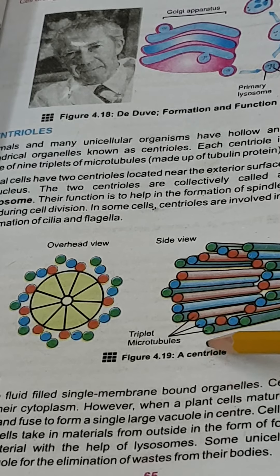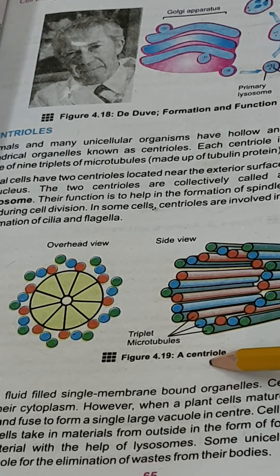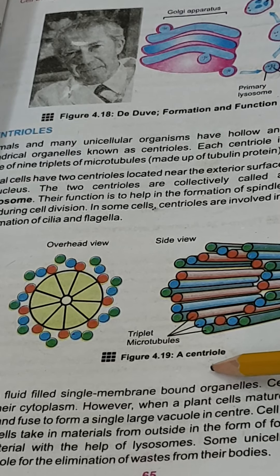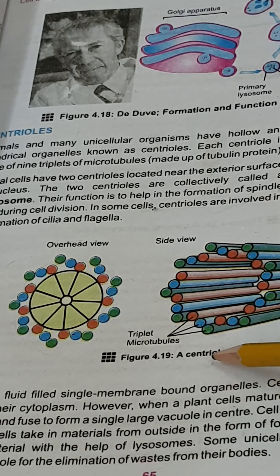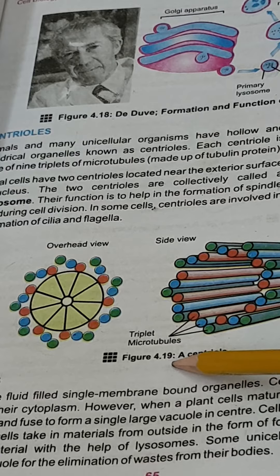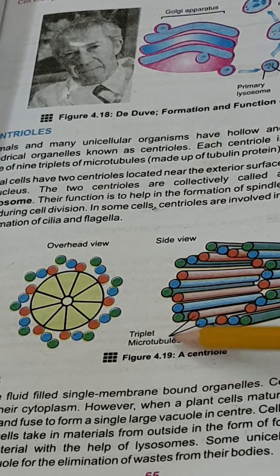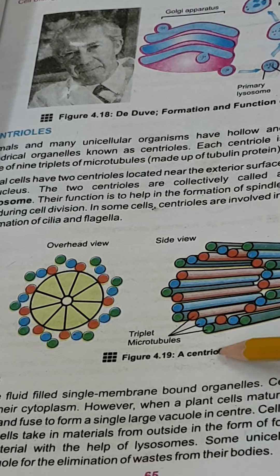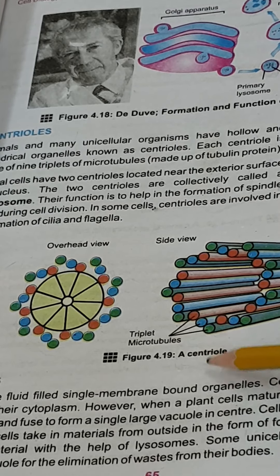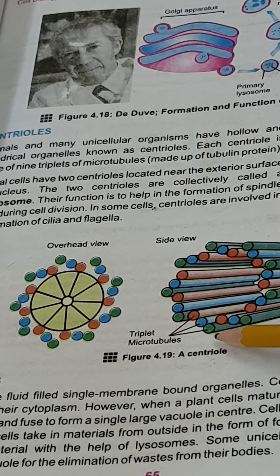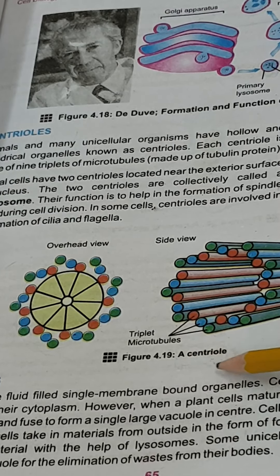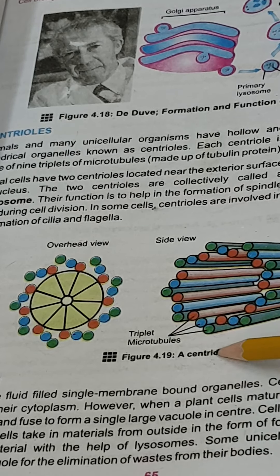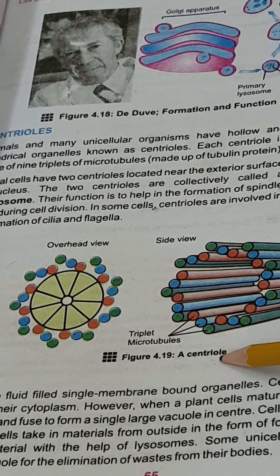The function of the centrosome is the formation of spindle fibers during cell division. During cell division, chromosomes need to move from one place to another, so special fibers known as spindle fibers are needed — centrioles form those fibers, which can contract and expand. Microtubules are also responsible for the formation of cilia and flagella of some cells.